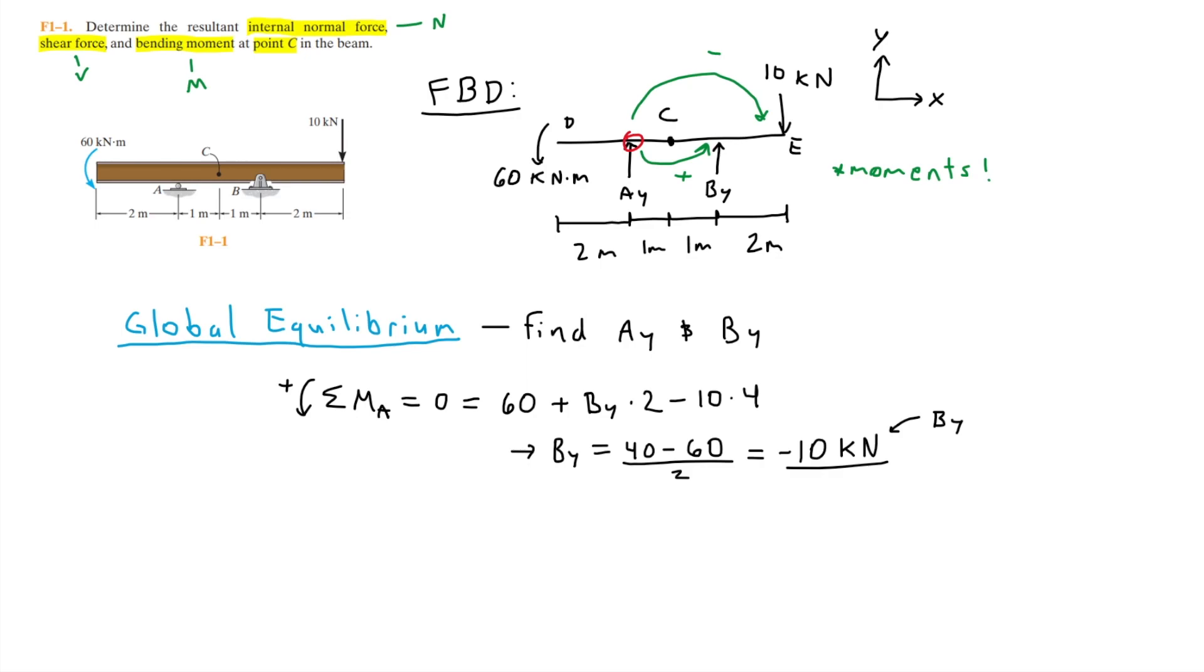Now that we know the value of BY, we can simply use the sum of forces in the y direction equal to zero to find AY. Assuming up as positive, this leaves us with AY minus the 10 kilonewtons. Even if your drawing is upwards, you should still leave the negative sign you get from your calculation, and then minus the 10 kilonewtons at point E.